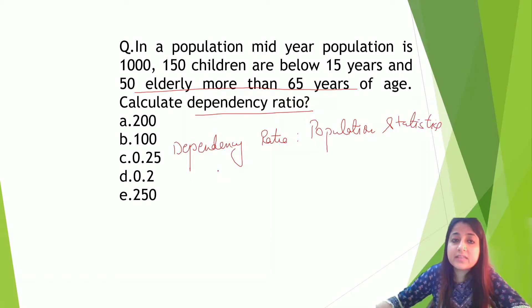It's a population statistics and dependency ratio ka formula hata hai, all those below 15 years plus all those above 65 years are dependent on the class of 15 to 65 years.